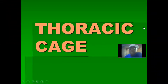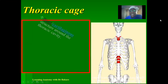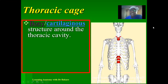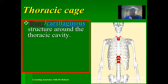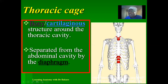Welcome. Let's look at the thoracic cage. The thoracic cage is a bony and cartilaginal structure that surrounds the thoracic cavity. This is the thoracic cavity within the thoracic region, and the space is enclosed by a bony and cartilaginal structure called the thoracic cage, made up of a bony component and a cartilaginous component.